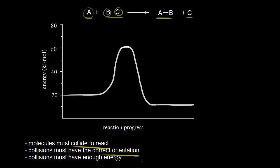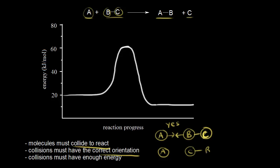The collisions must have the correct orientation in space to be an effective collision. For example, for this reaction, we have molecule BC approaching A in a certain orientation. Since we're forming a bond between A and B, this is the proper orientation — the way our collision has to occur for the reaction to proceed. If the diatomic molecule BC approaches in the opposite direction, so that atom C approaches atom A, this is not the proper orientation for the reaction to occur. So there has to be a collision, but it has to be in the proper orientation.